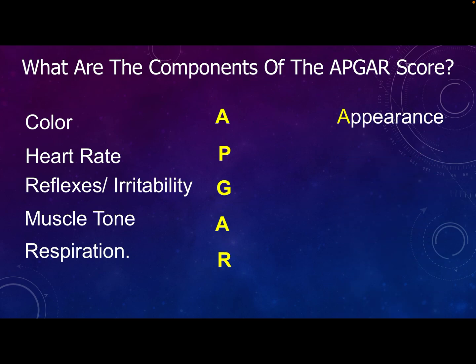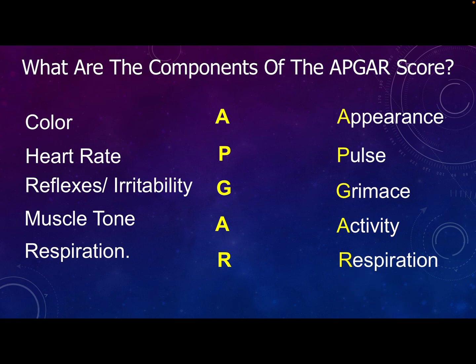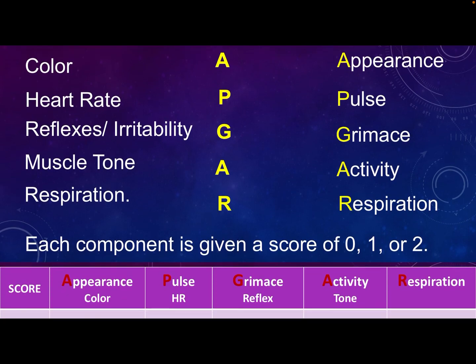A is for Appearance, which is the color. P is for Pulse, which is the heart rate. G is for Grimace, which reflects irritability. A is for Activity, which reflects muscle tone. And R is for Respiration. Each component is given a score of zero, one, or two.